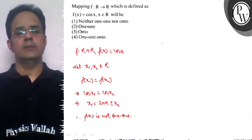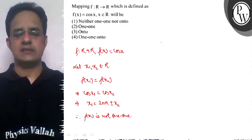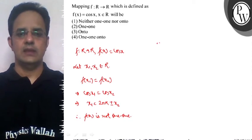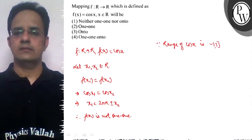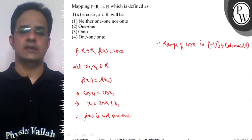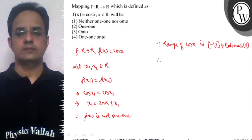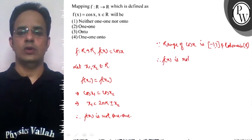Now we also know that the range of cos x is from -1 to 1. Since the range of cos x is [-1, 1], which is not equal to the codomain, and the codomain of the function given is R, therefore f(x) is not onto.